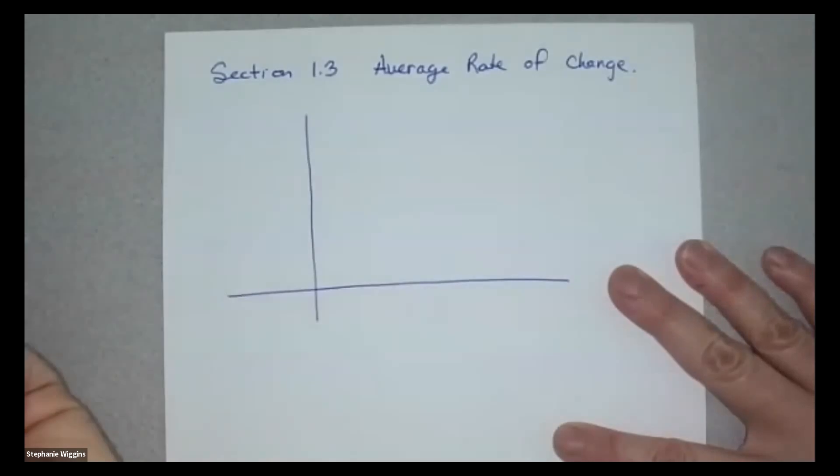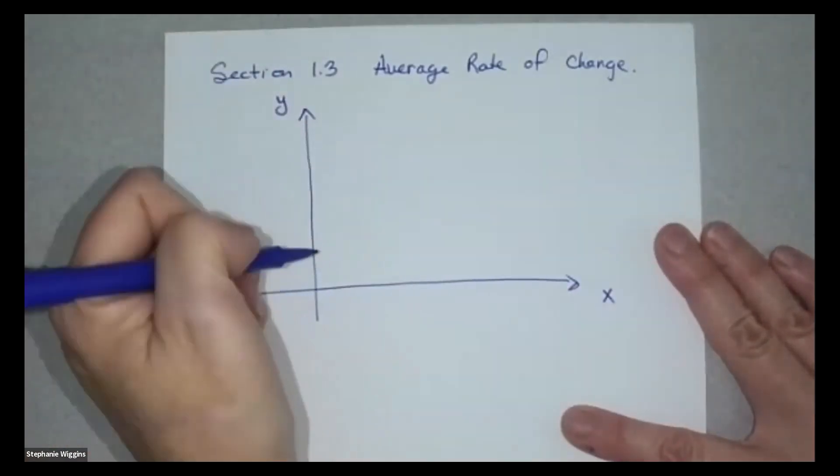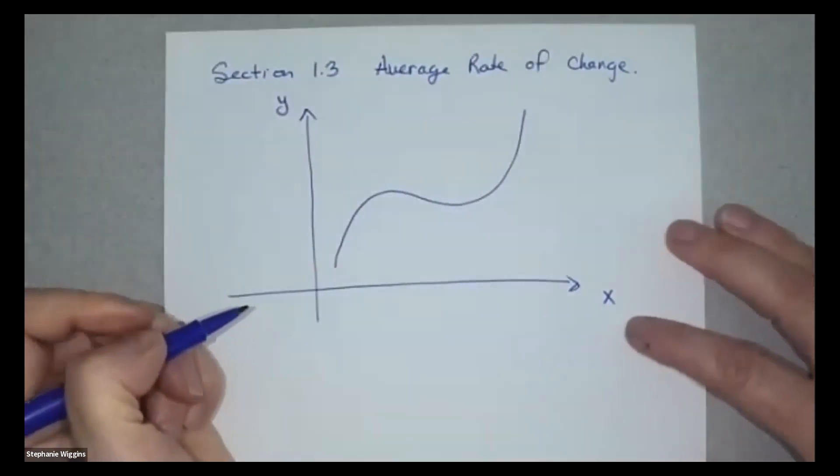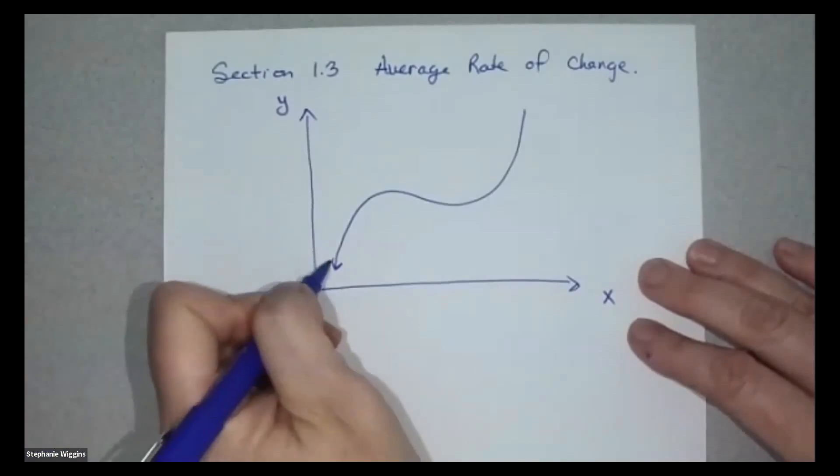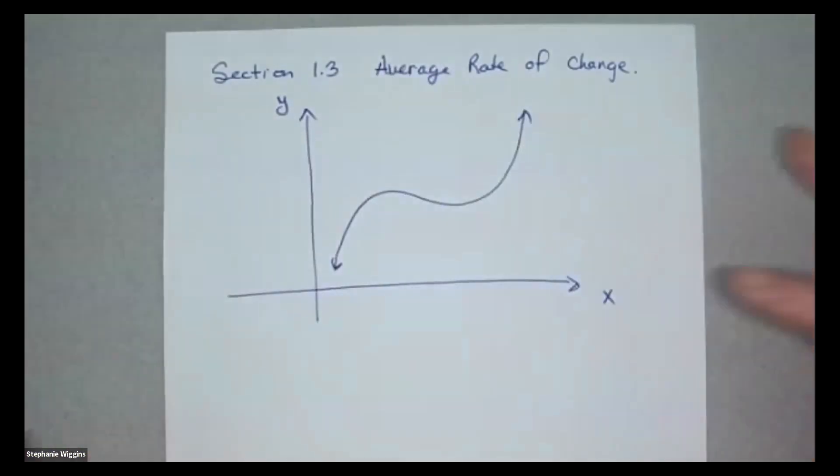So here we have, for example, a coordinate plane and we have some function. It's changing, right? It's increasing, then it's decreasing, then it's increasing, but on average it's an increasing function.